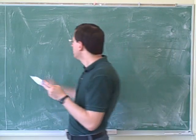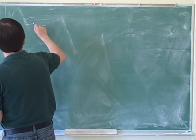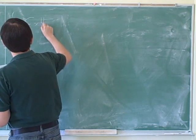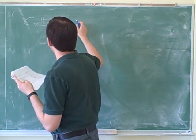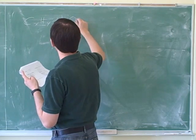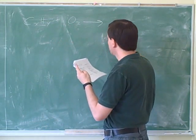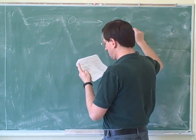A hydrocarbon sample combusted in oxygen. So we have the hydrocarbon combined with O2, which produces CO2 and H2O.